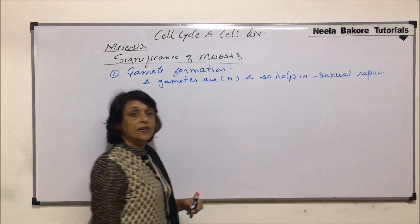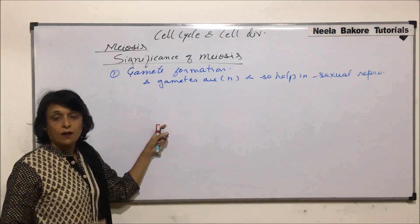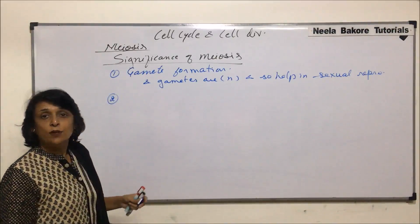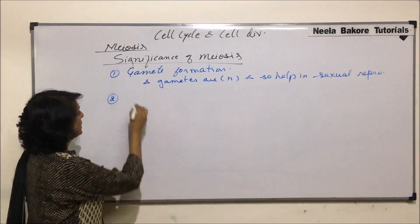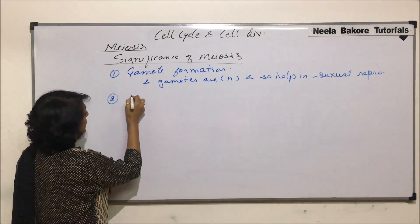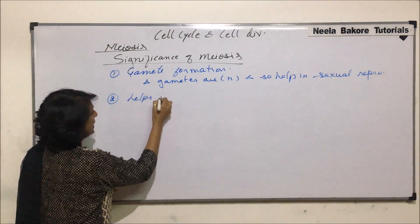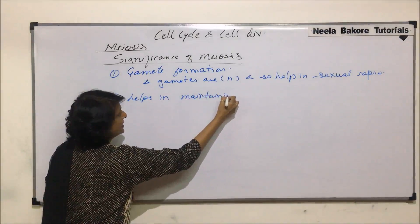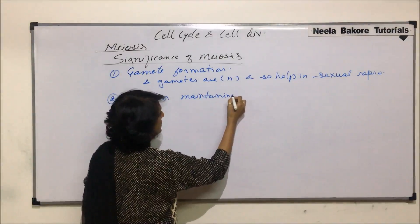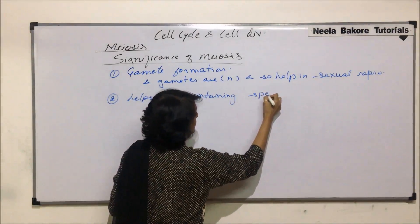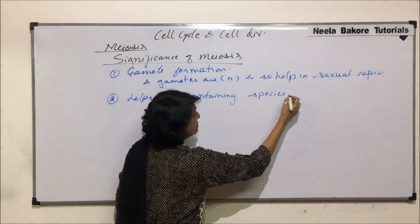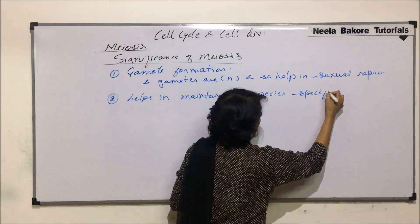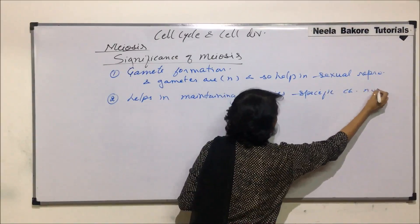In the same continuation, because of this process, each species is able to maintain its chromosome number. So the second significance of meiosis is that it helps in maintaining the species-specific chromosome number.